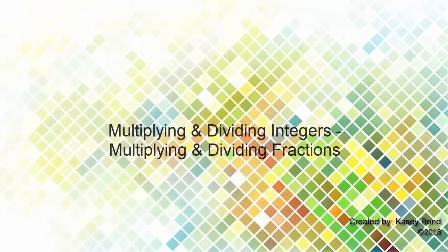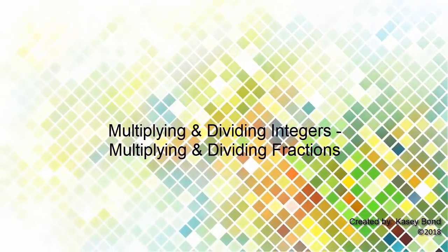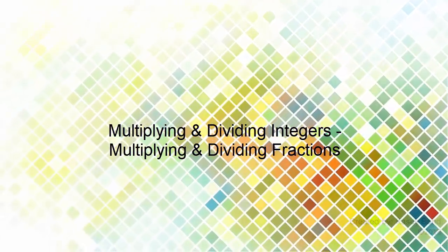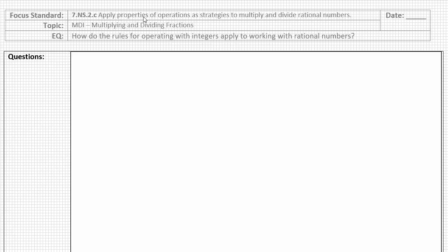For today's lesson, our focus standard comes from Grade 7, Number Systems, Standard 2C: Apply Properties of Operations as Strategies to Multiply and Divide Rational Numbers. Our topic comes from Multiplying and Dividing Integers and Multiplying and Dividing Fractions. Our essential question for today is: how do the rules for operating with integers apply to working with rational numbers?